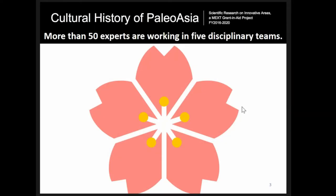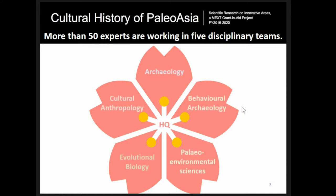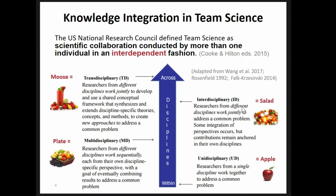This is a Japanese Ministry of Education Science funded project called Cultural History of Paleo-Asia. We have more than 50 research experts working together in five disciplinary teams: archaeology, behavioral archaeology, paleoenvironmental sciences, evolutionary biology, and cultural sciences. I am working as a coordinator in the headquarters.